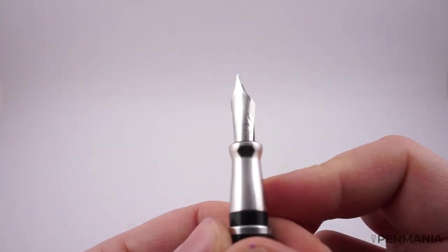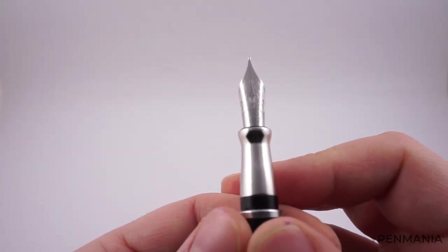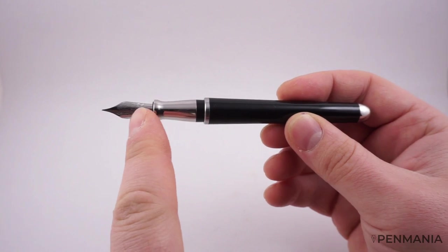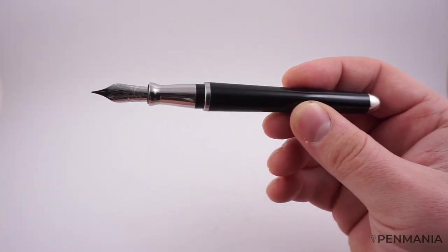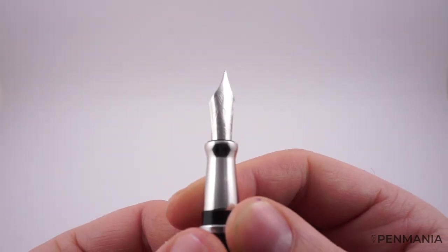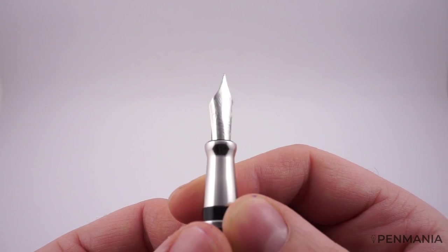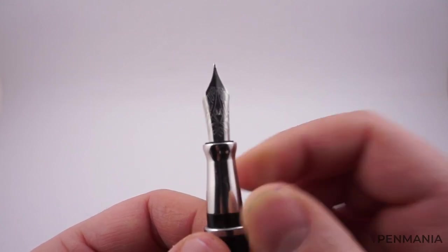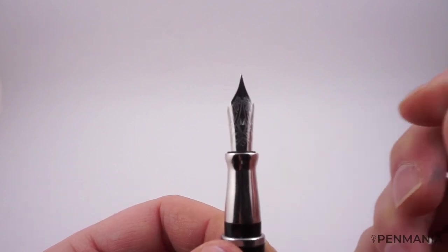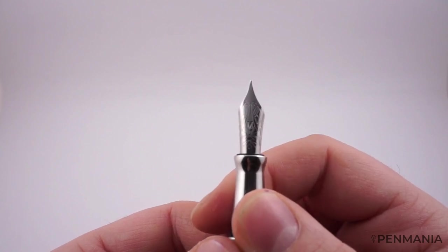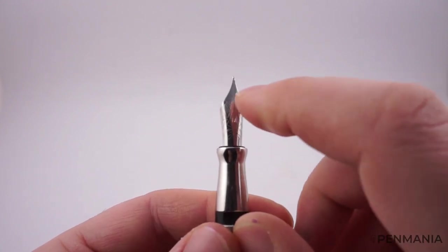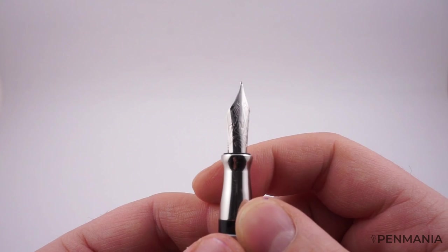We have the nib, a number six nib, very nice as you can see. Suitable for the size of the pen. It is made by Bock for Pinaider and customized for them. We have the size of the point in there. This is a steel nib, a medium point, a medium nib. We don't have a breather hole.